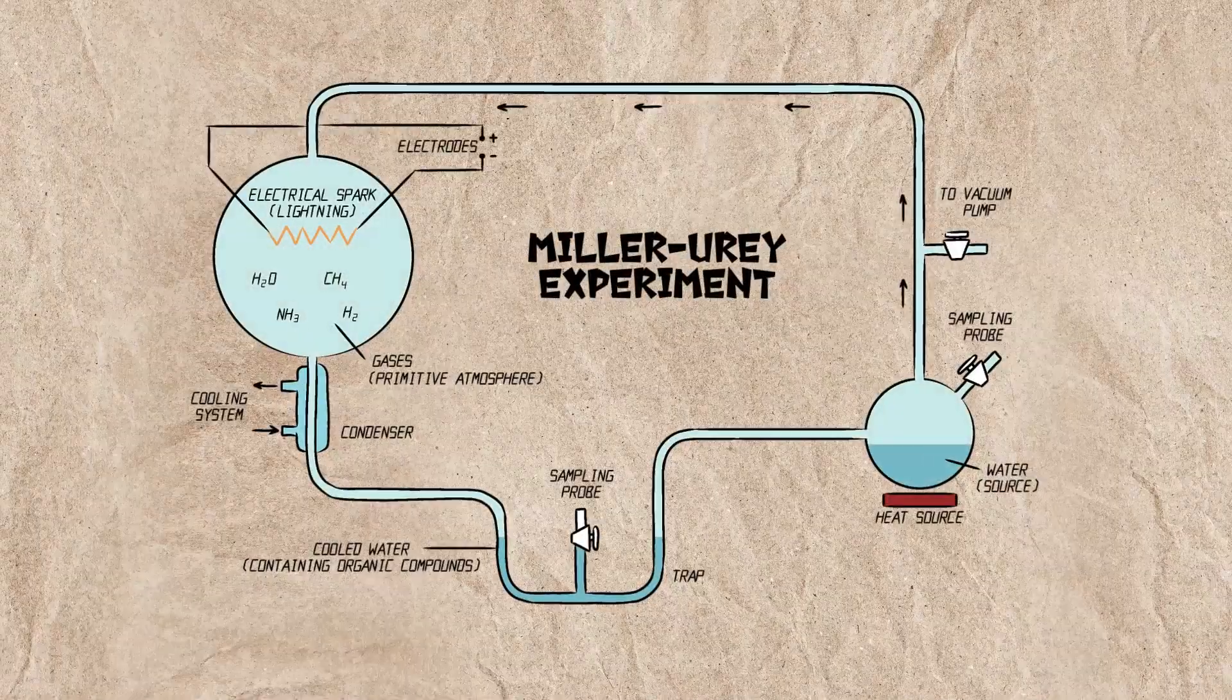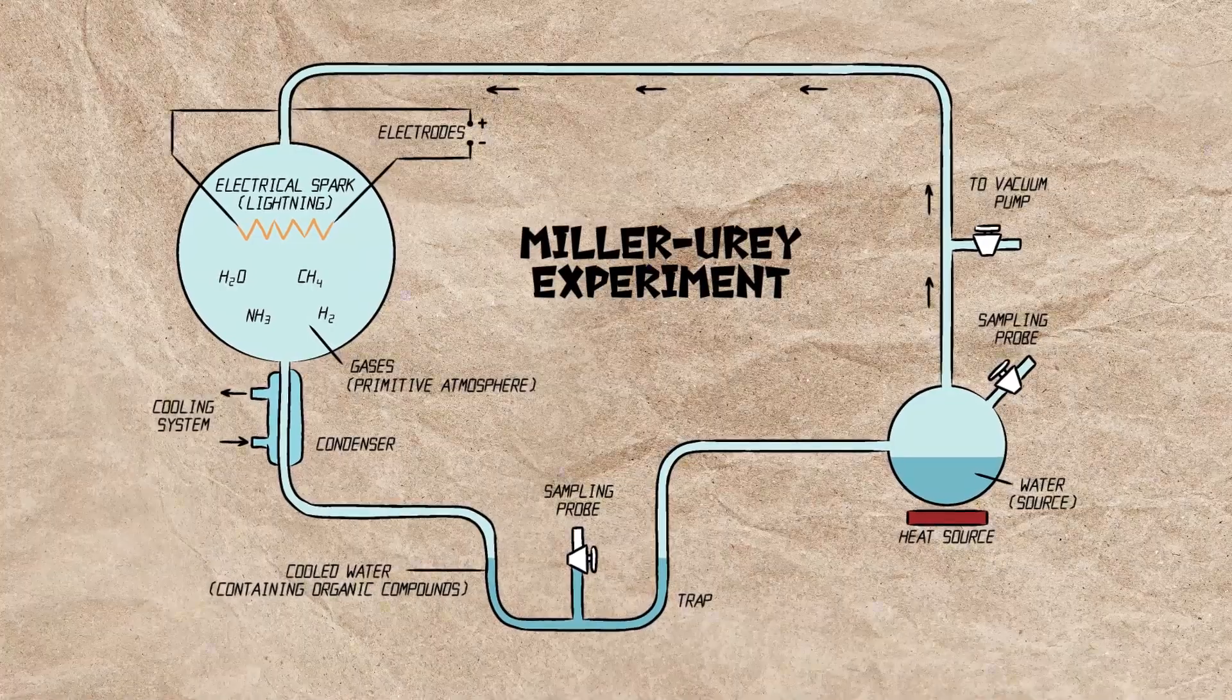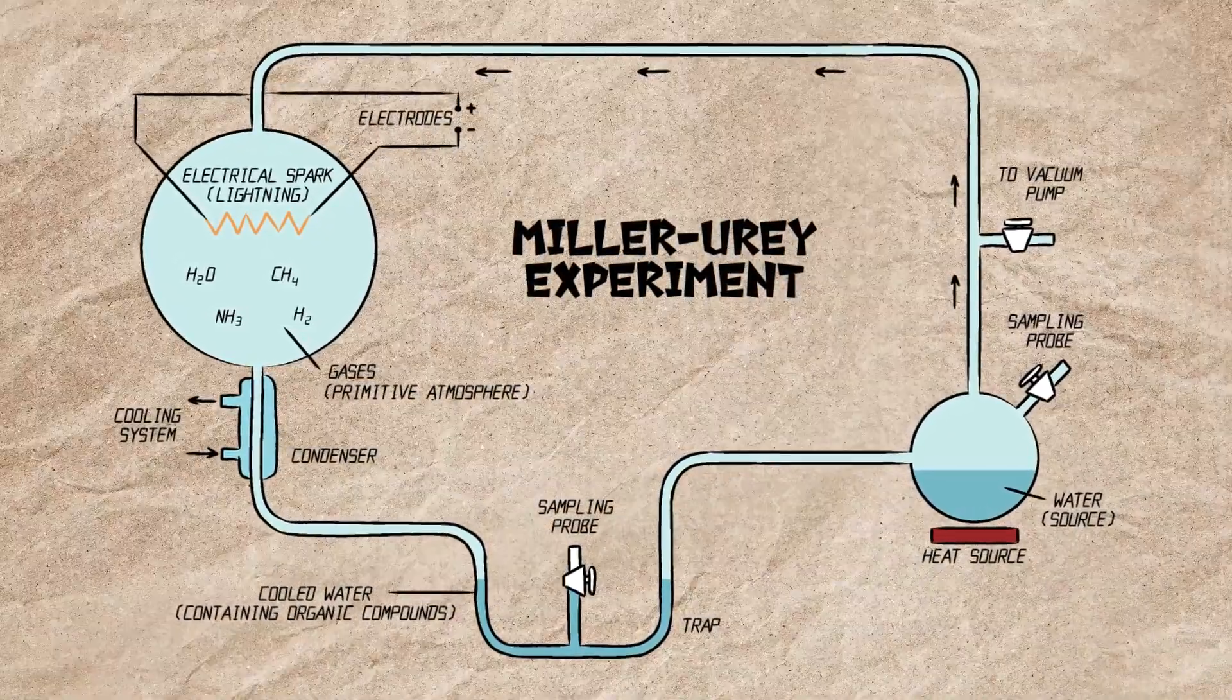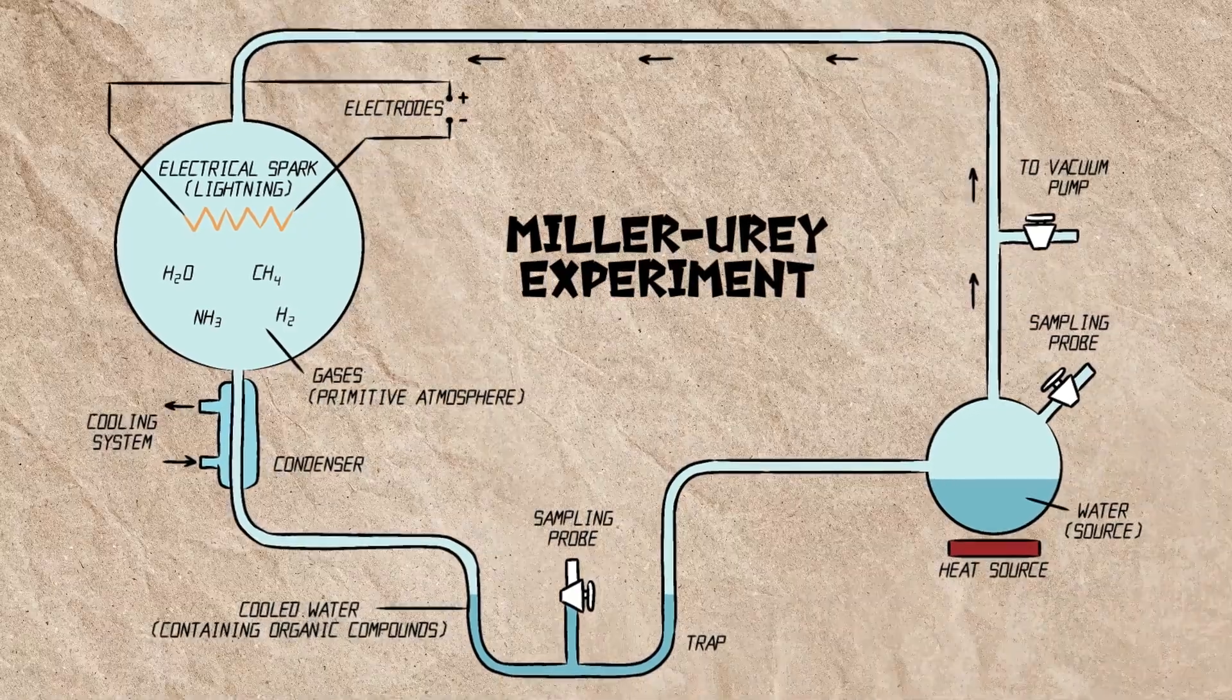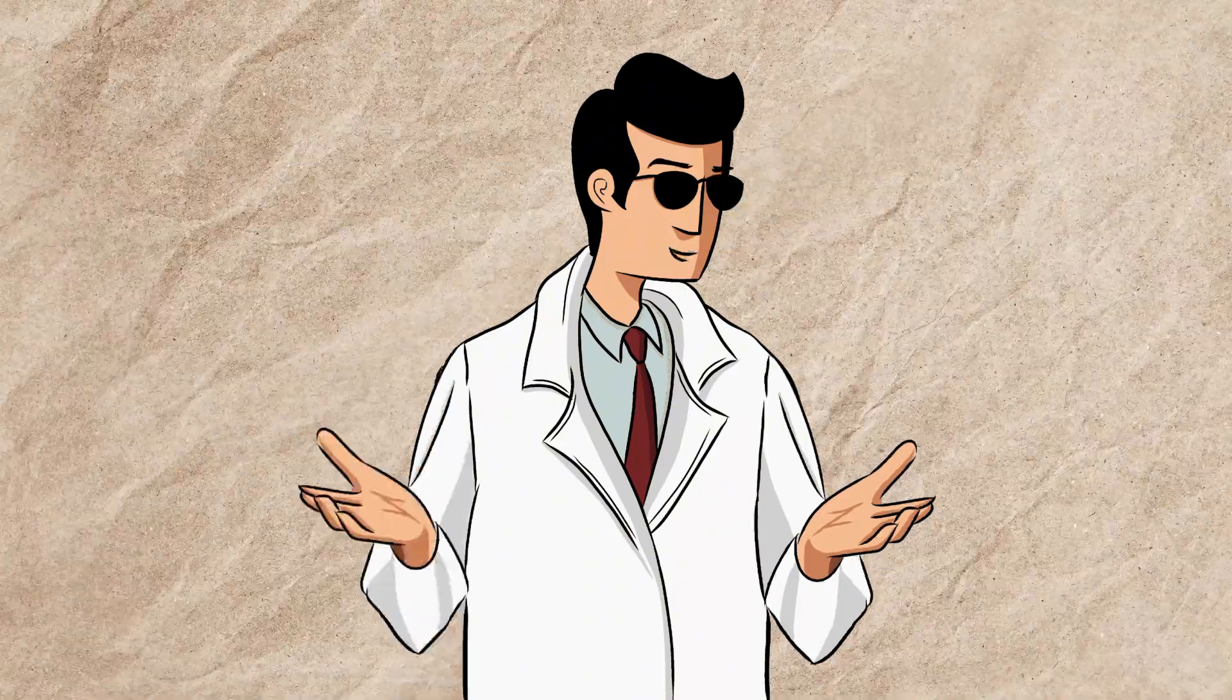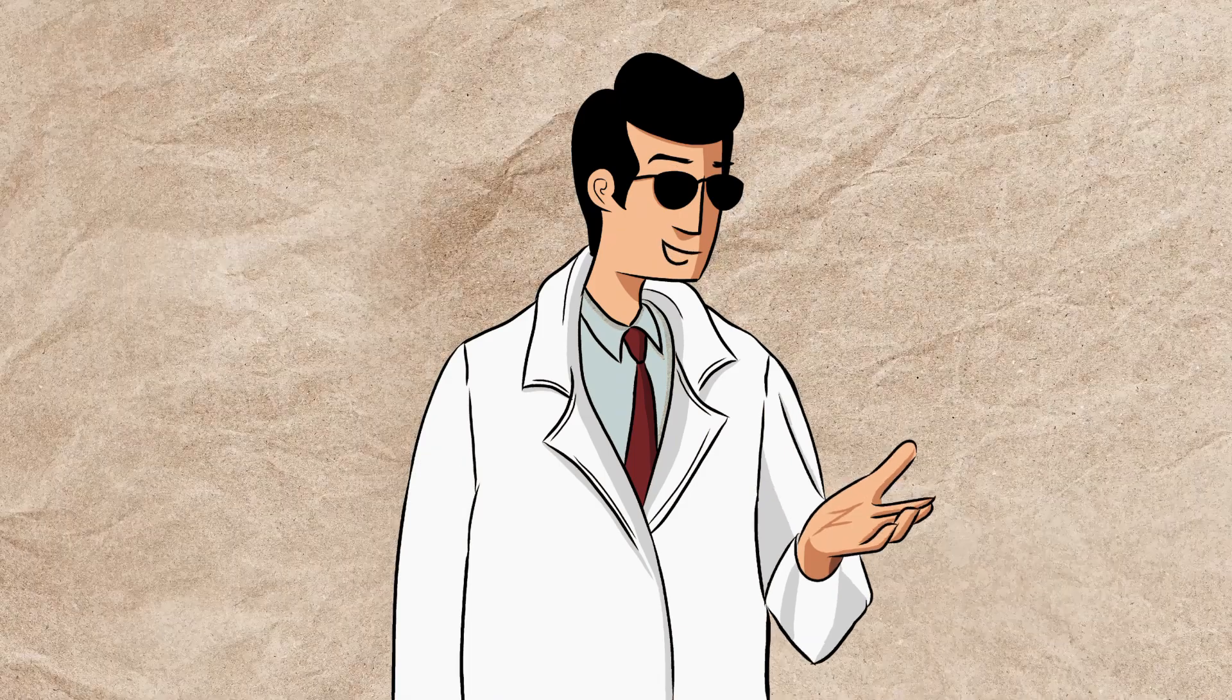They created a lab experiment that mimicked the conditions of early Earth, using gases like ammonia, methane, and water vapor, and simulating lightning by passing electrical sparks through the mixture. Upon getting the result, they discovered that amino acids, the building blocks of proteins, formed under these conditions. While modern scientists now believe Earth's early atmosphere was different from what Miller and Urey used, their experiment still sparked the creation of a whole new field of study, called abiotic chemistry, which focuses on the chemistry that existed before life began.